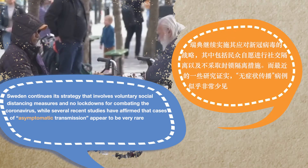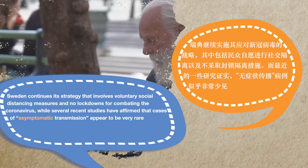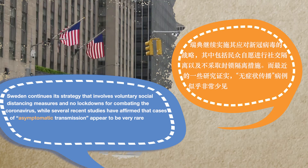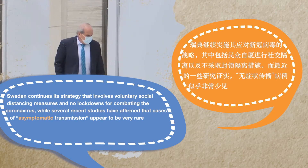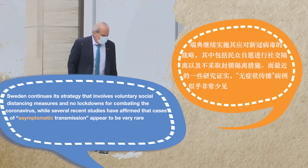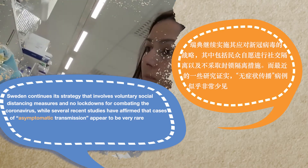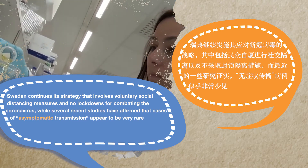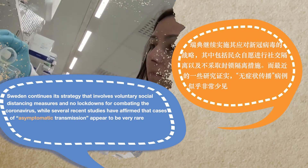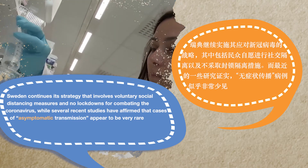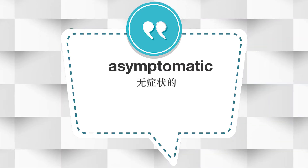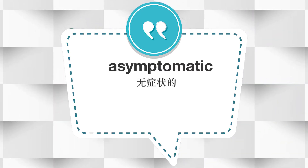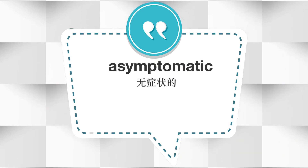瑞典继续实施其应对新冠病毒的战略，其中包括民众自愿进行社交隔离，以及不采取封锁隔离措施。而最近的一些研究证实，无症状传播病例似乎非常少见。好的，我们今天学习的词是 ASYMPTOMATIC。